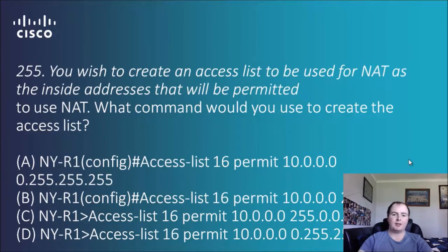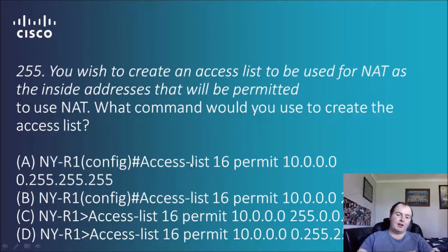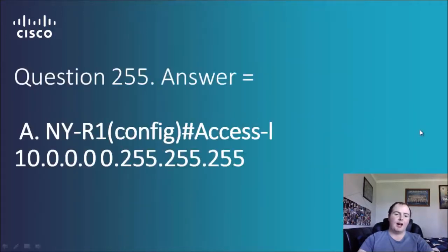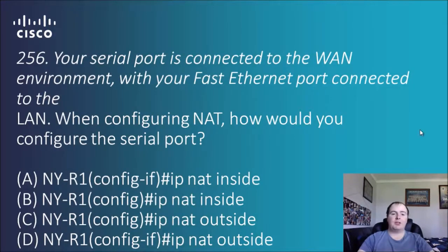We can nearly rule out the bottom two answers already, leaving us with the top two: 'access list 16 permit' followed by the address. We need 'access list' with a number to denote which rule, then 'permit' or 'deny' — and 'permit' is correct for those two. Leaving the address at the front vacant makes that option A the answer.